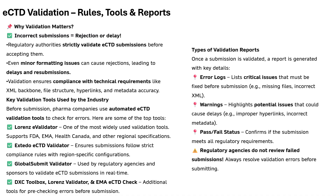Let's talk about the most important step in ECTD publishing: validation. Think of validation as a quality check — if your ECTD fails, regulators won't even read it. Regulators have strict rules, and even small mistakes like broken hyperlinks, missing metadata or incorrect formats can lead to rejection or long delays. Use validation tools that scan your submission for mistakes — popular ones include Lorenz E-Validator, Extedo ECTD Validator and Global Submit Validator. After validation, you'll get a report with error logs (critical issues that must be fixed), warnings (best to correct) and a pass or fail status. Never skip validation — a rejected submission could cost you weeks or even months.